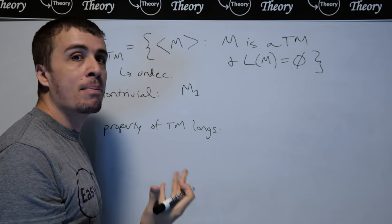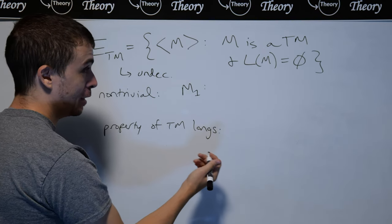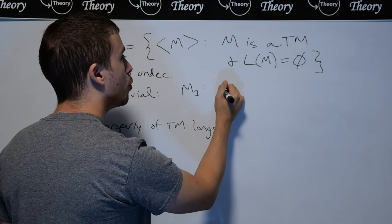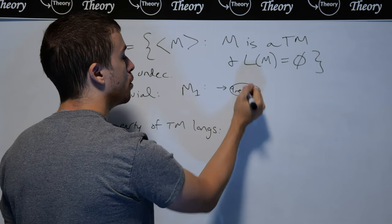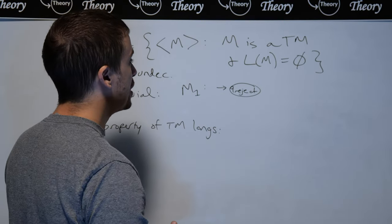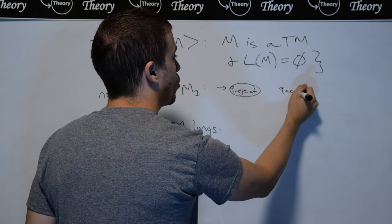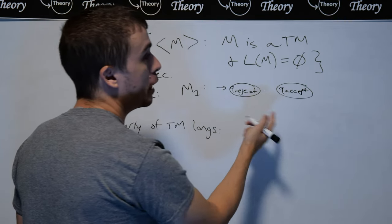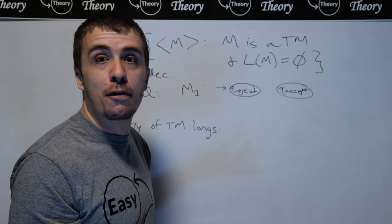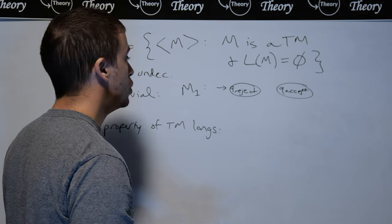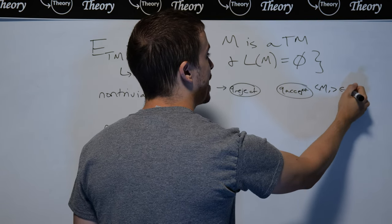Let's consider a machine I'm going to call M1, whose language is going to be empty. One thing we can do is just reject on every single string that is given. So I can make the start state of this Turing machine the rejecting state, and put the accept state over here not connected at all. Since the machine starts at the reject state, every single string is going to be rejected. And so M1's description is in ETM.